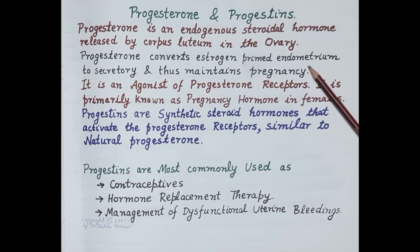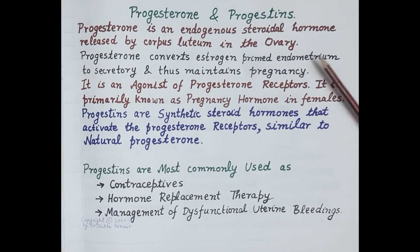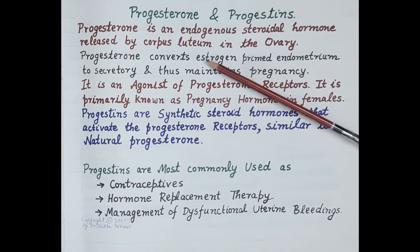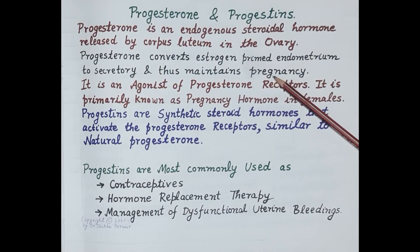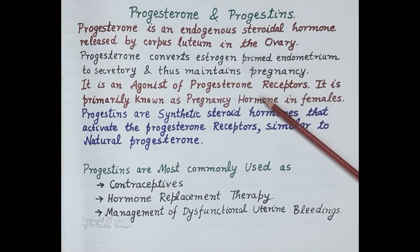Progesterone is primarily produced by the corpus luteum in a woman. The endometrium is the innermost lining of the uterus. It is estrogen that proliferates the endometrium, and progesterone converts the estrogen-primed endometrium to secretory, thus maintaining pregnancy. Progesterone increases blood flow to the endometrium and increases secretion from endometrial glands, so its main function is to maintain pregnancy.